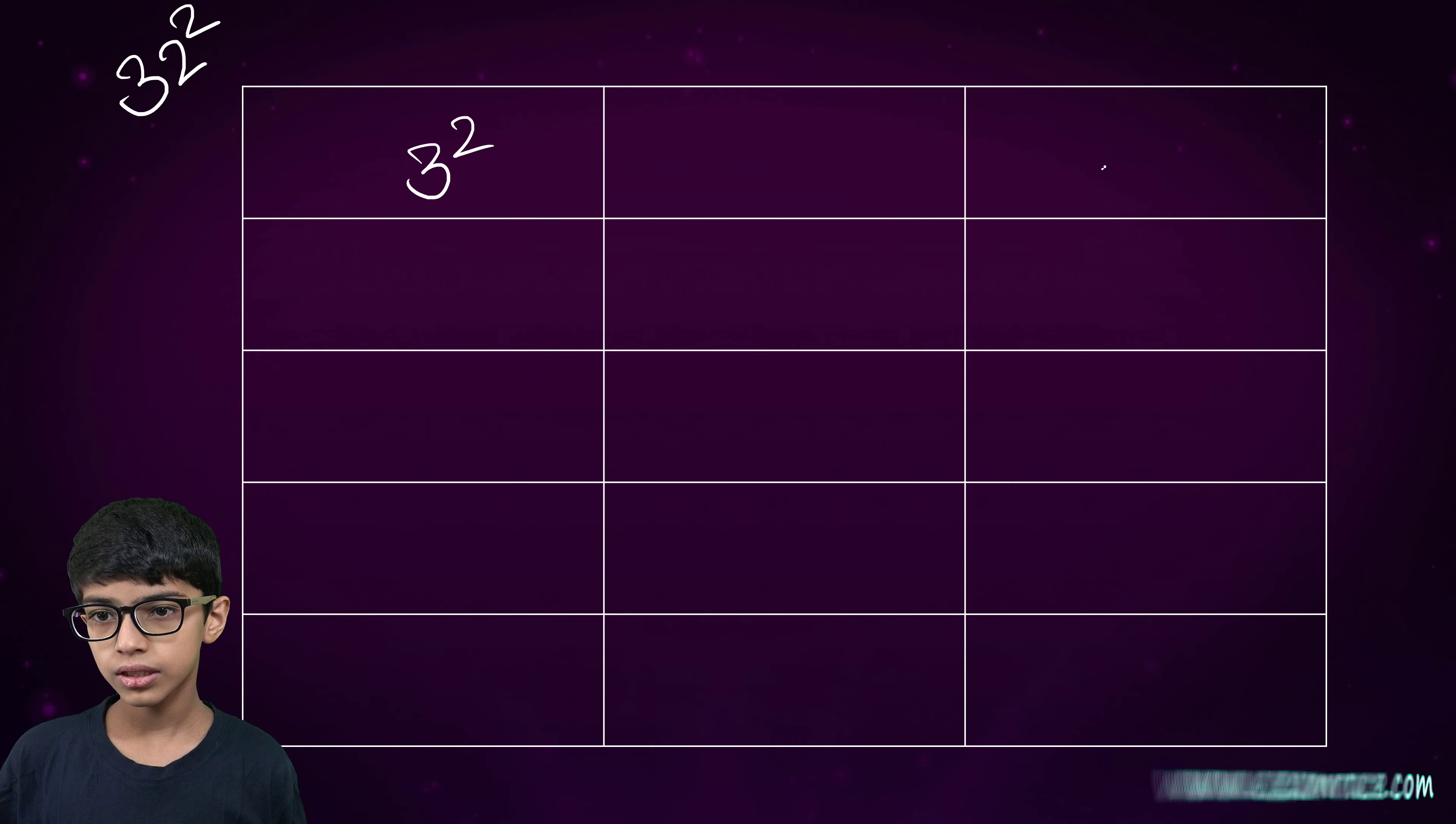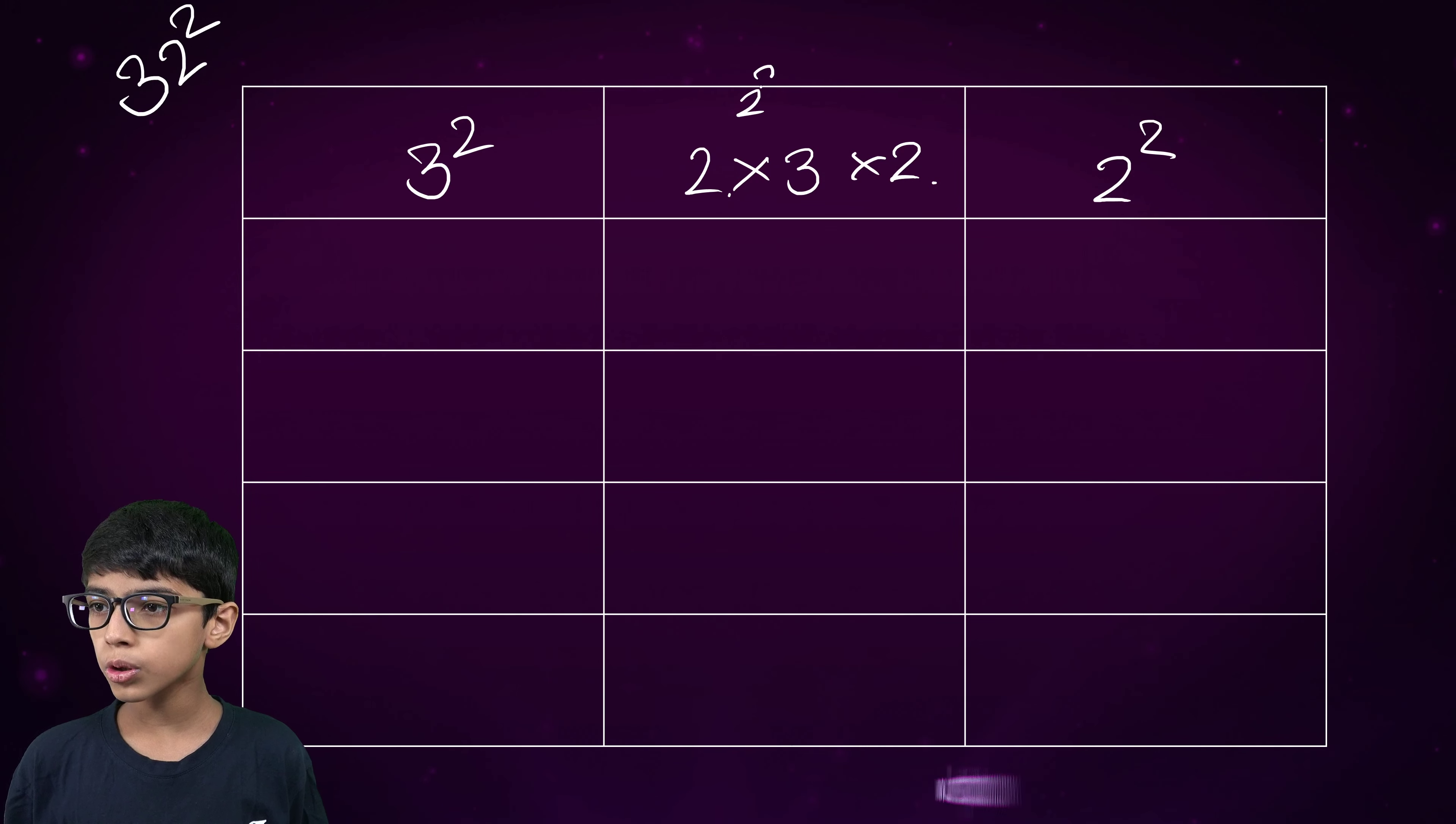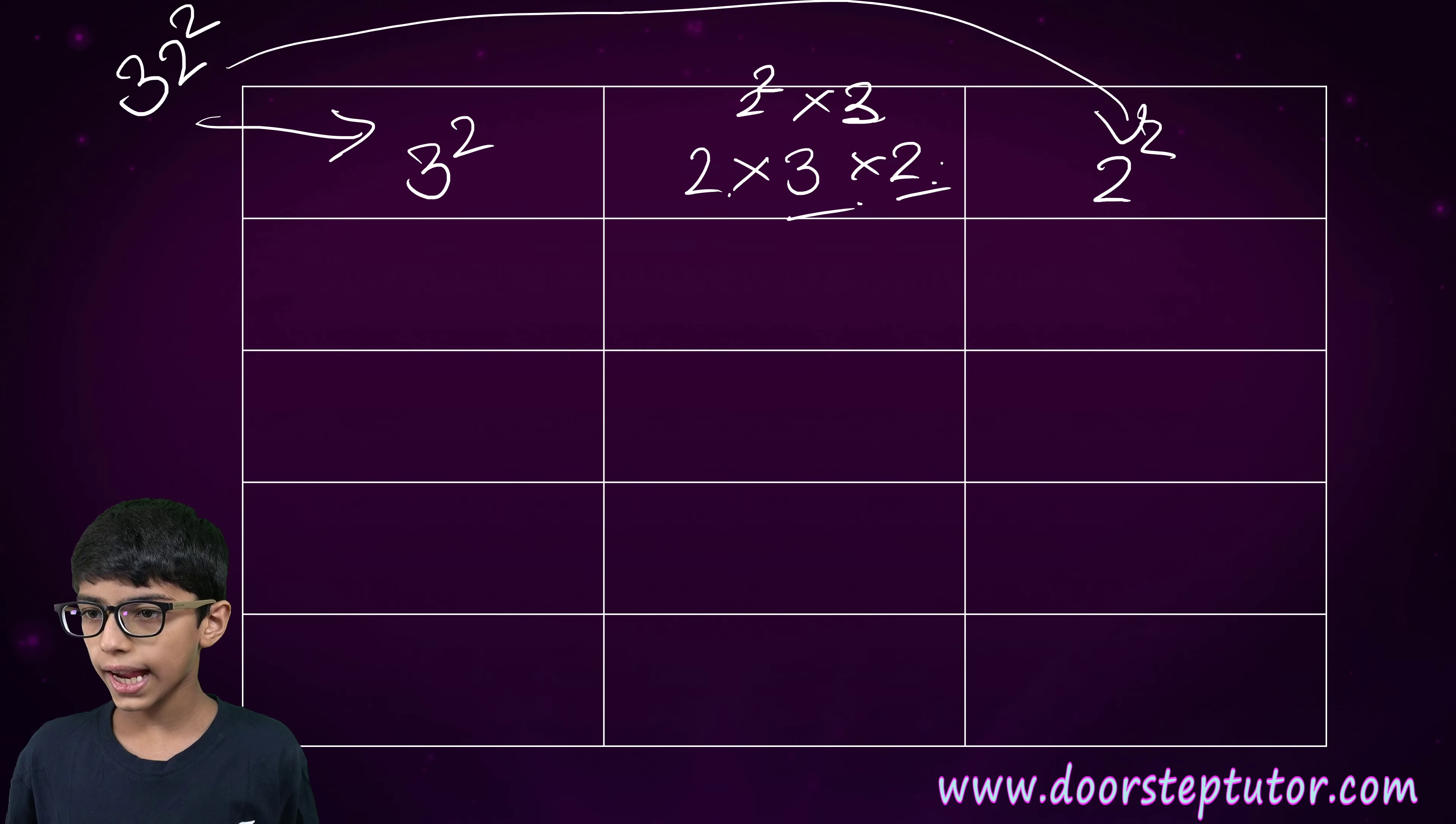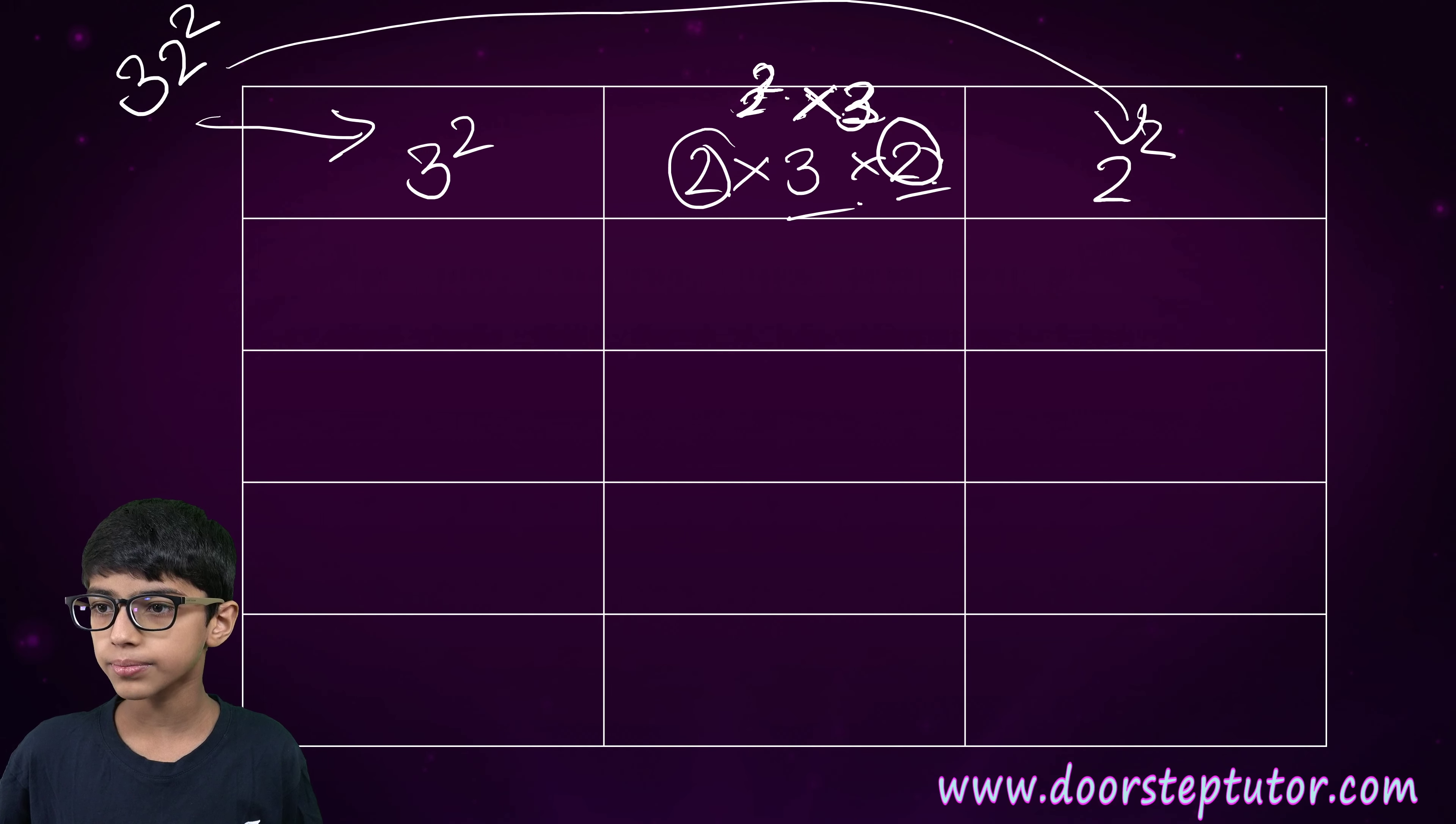Three square. Two square. Two into three into two. Or, two square into three. Here, three. And here, two. This three is the 10th digit. This two is the 1st digit. I can take these two separately and write them as two into two. That is two square. And multiply this by three.